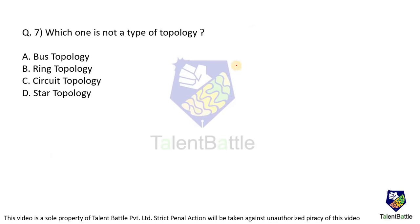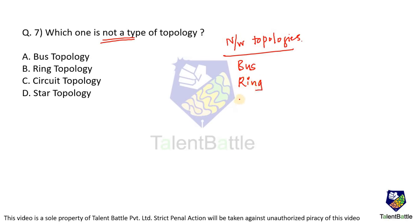Moving to the next question about computer networks: which one is not a type of topology? Various types of network topologies exist — bus, ring, star, hybrid, and mesh topology. Out of these, there is no such terminology as 'circuit topology.' The question asks which is NOT a type of topology, so option C (circuit topology) is the correct answer.